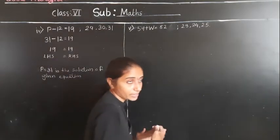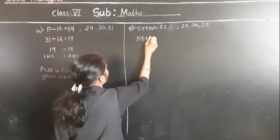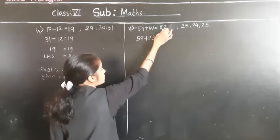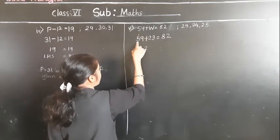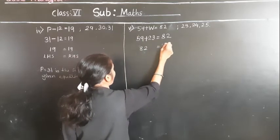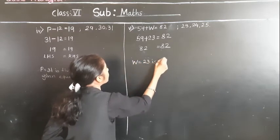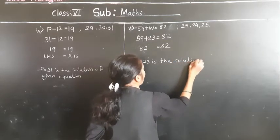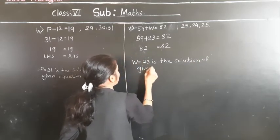Left hand side is equal to right hand side. 59 plus 23 is equal to 82: 9 plus 3 is 12, carry 1; 5 plus 1 is 6, plus 2 is 8. So 82 is equal to 82. Both are equal. So W is equal to 23 is the solution of the given equation.